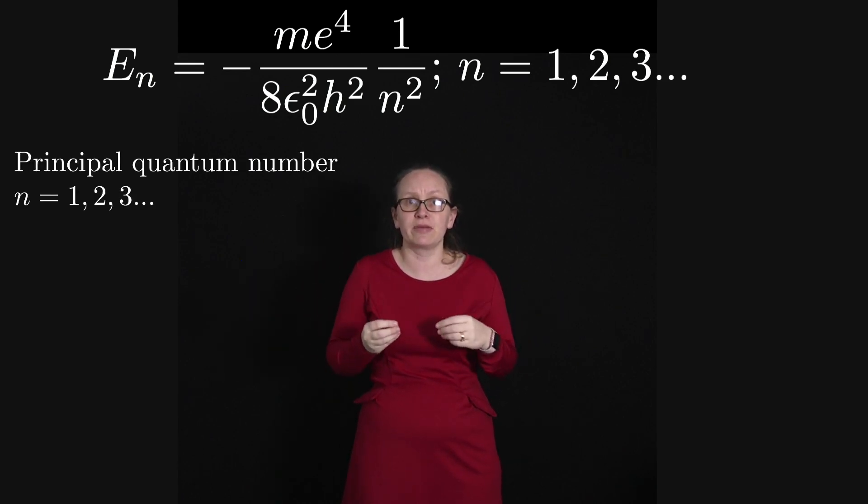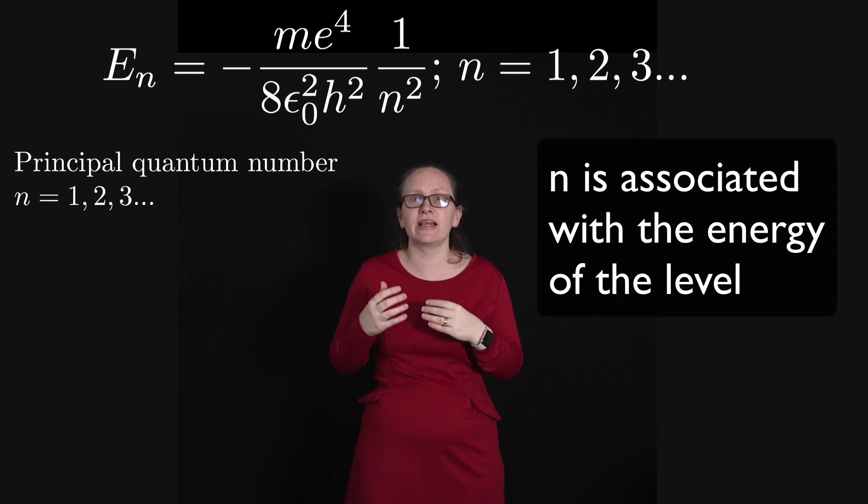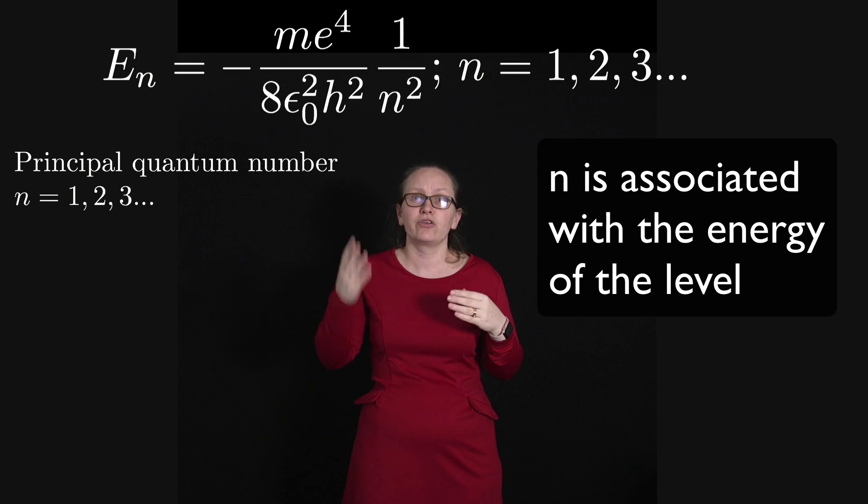So the three quantum numbers are n, the principal quantum number, which is associated with the energy of the state through the energy equation that we've just seen.